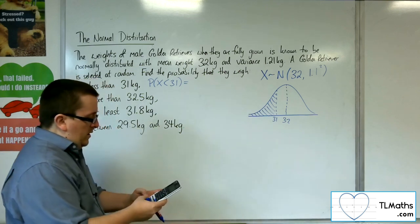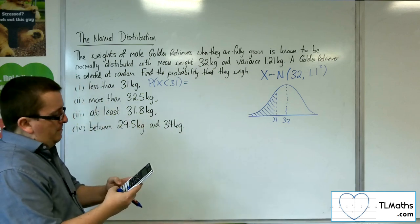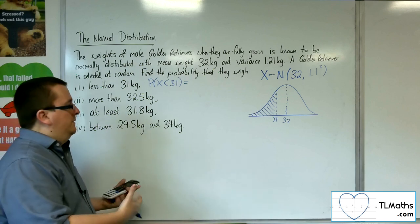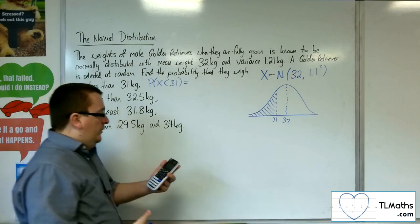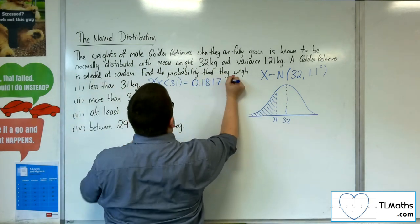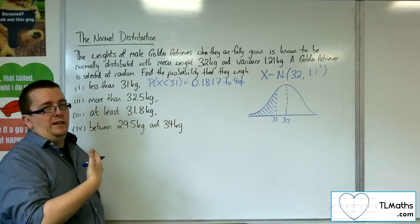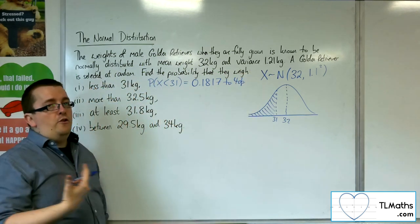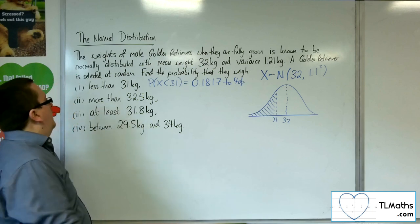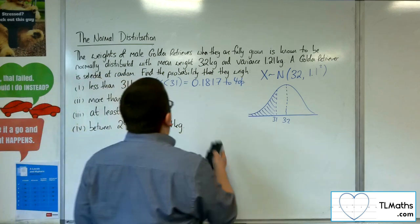So long as we choose a number that's far enough down, I could use 0 if I wanted to. I'm going to use 0 as my lower. The upper can be the 31. The sigma is 1.1 and the mean is 32. So just use a lower that's far enough down. So I get 0.1817 to 4 decimal places. Don't get stuck up on which figure you're using as the lower here, so long as it is far enough away.